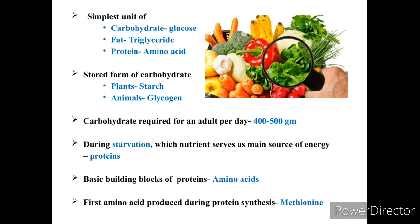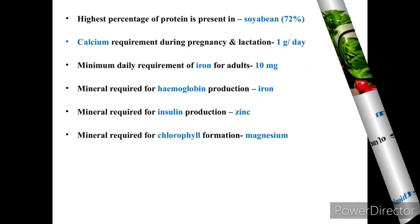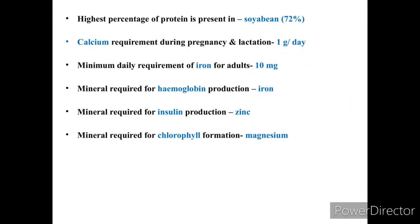The first amino acid produced during protein synthesis is methionine. The food item with the highest percentage of protein is soya bean — 72% of soya bean consists of protein.